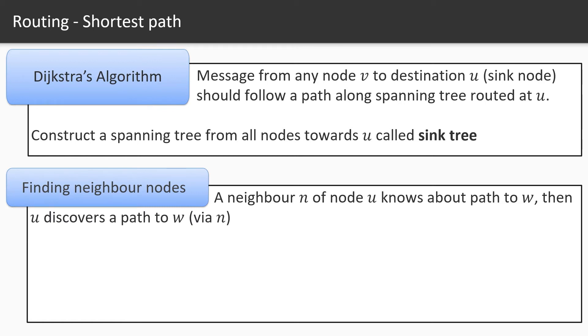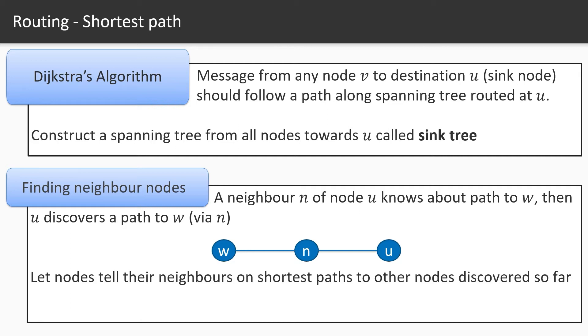If a neighbor n of the node u knows about a path to another node w, then u discovers a path to w via node n which can be simply illustrated in this way. Node n knows about w and it informs it to the node u and eventually we are going to let nodes tell the neighbors on the shortest path on the other nodes discovered so far.